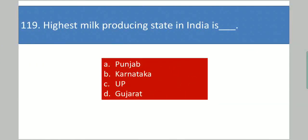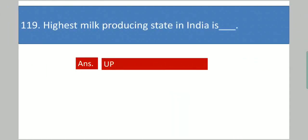Next question: The highest milk producing state in India is dash. Your options are: Punjab, Karnataka, UP, Gujarat. Your answer is UP.